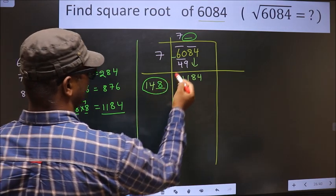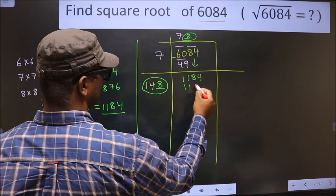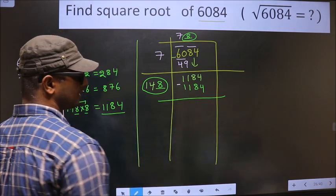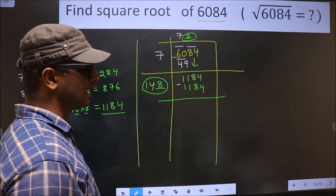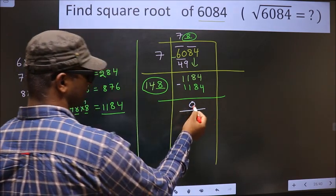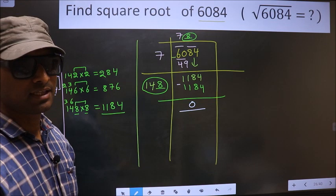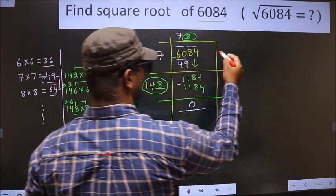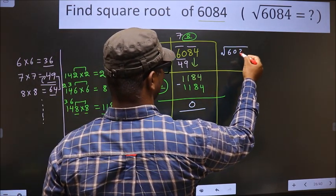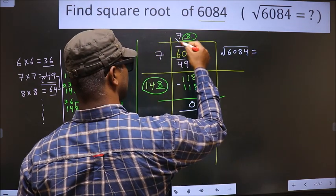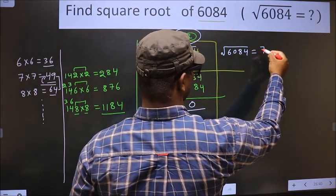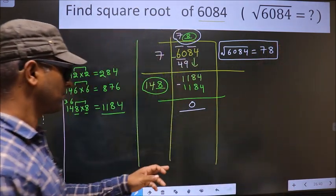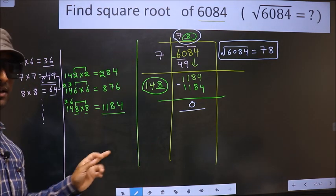So we take 8 here and 8 there, and 1184 below. Now subtract: 1184 minus 1184 gives 0. We got 0, which means the given number is a perfect square, and the square root of 6084 is 78. So this is our answer.